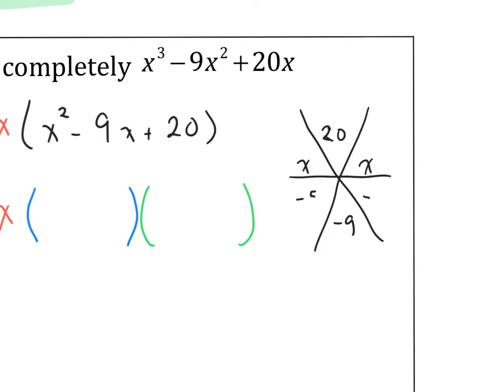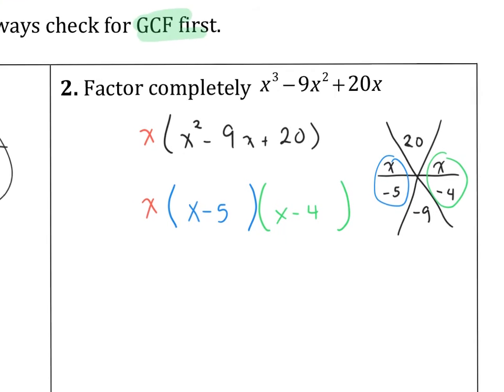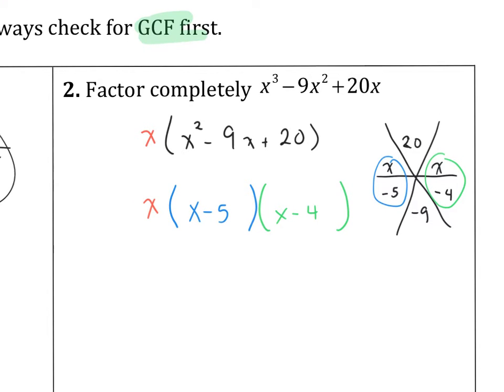And we see that 5 and 4 work here. So one of my factors is x minus 5, and one of my factors is x minus 4. And there we go. And so this is what I commit to as my answer, my factored form, or I factored this completely.